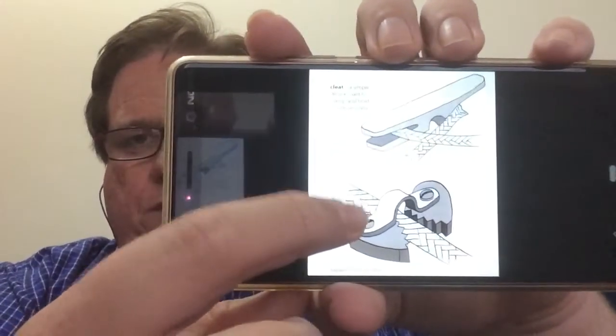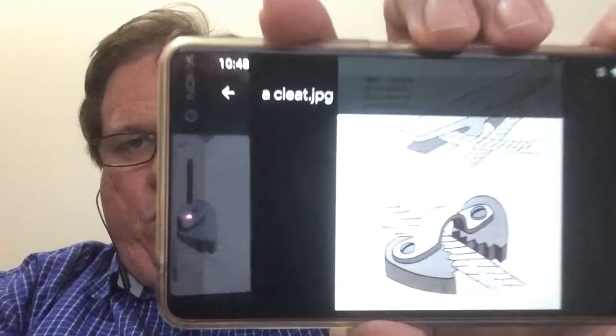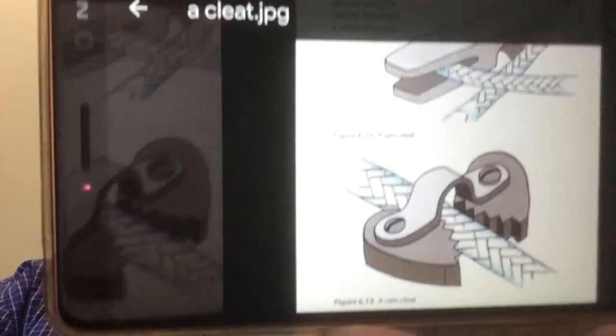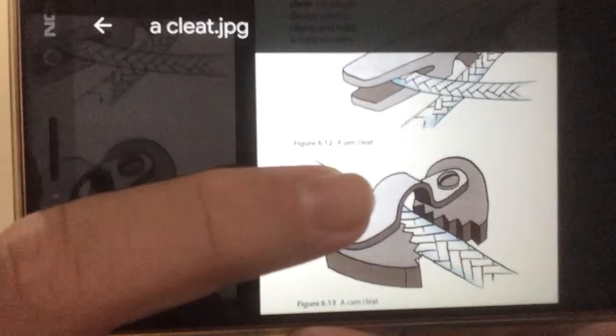And then the one below it, which is very interesting, is something called a jam cleat. See if I can get it to focus nicely here for you.